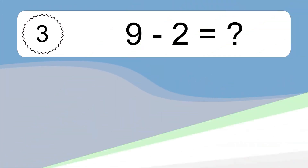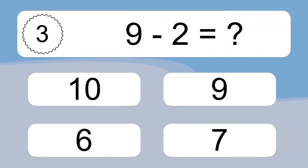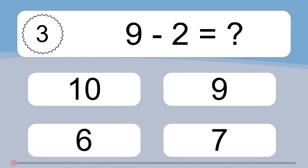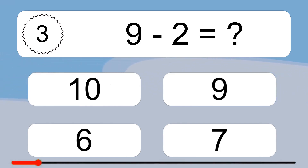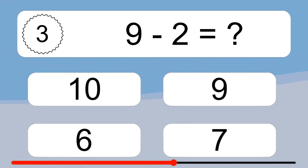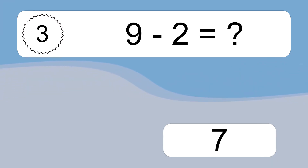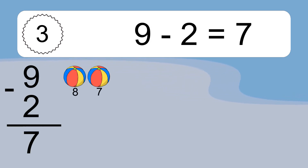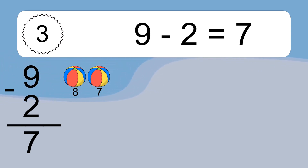9 minus 2 equals what? 9 minus 2 equals 7. Let's count it: 8, 7.